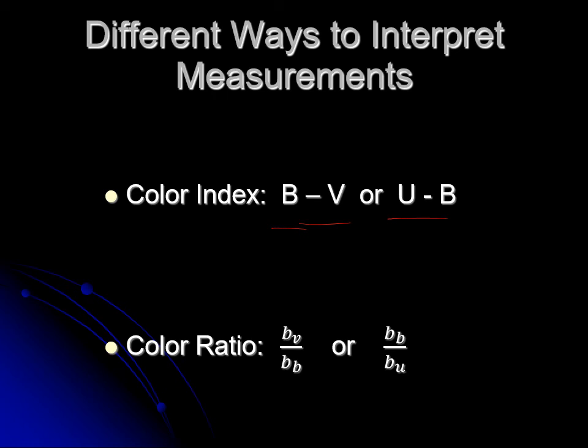More recently, astronomers have started using what they call color ratios, which is the visual magnitude divided by the blue magnitude, or the blue magnitude divided by the ultraviolet magnitude. The only advantage of doing that is you always get positive numbers instead of plus and minus. I don't really like that. I prefer the B minus V.